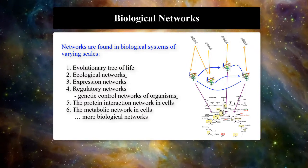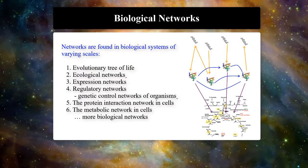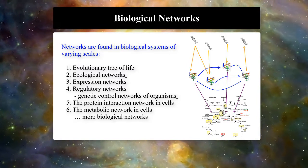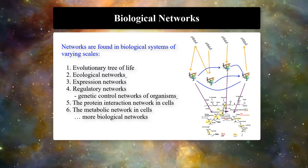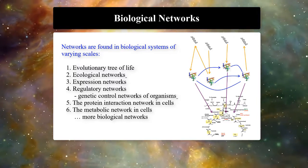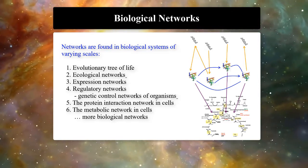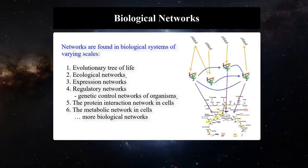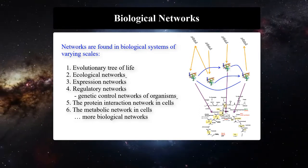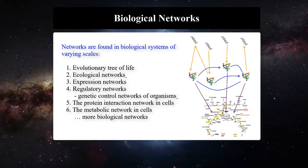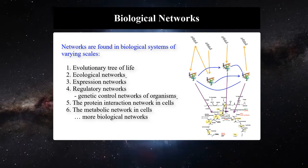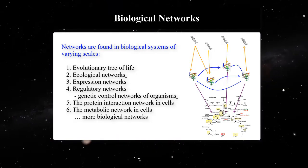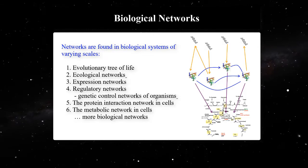Many real-world systems can be represented as networks, including biological networks. Networks are found in biological systems of varying scales, from evolutionary tree-of-life and ecological networks to expression networks and regulatory networks. Protein or metabolic interactions in a cell can also be represented as a graph or a network.